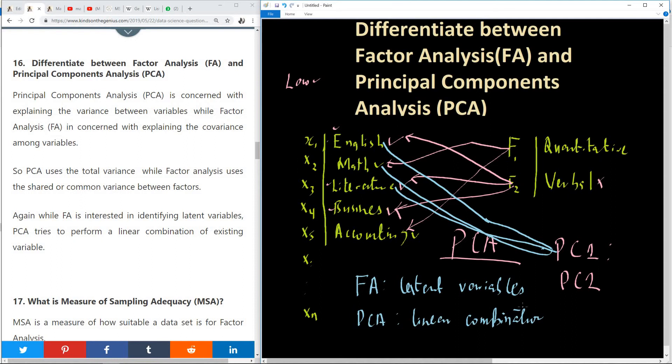So just to summarize, PCA is concerned with the total variance, while factor analysis is concerned with covariance. So that is the key word. And again, PCA uses total variance, factor analysis uses shared or common variance among factors. Factor analysis identifies latent variables, and PCA performs linear combination.